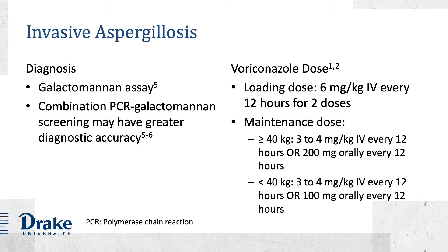Invasive aspergillosis is an opportunistic infection from the aspergillus species mold that usually affects patients who are immunocompromised. The infection most commonly involves the respiratory tract and presents as sinusitis, pneumonia, or tracheobronchitis. Galactomannan may serve as a diagnostic biomarker as it is a carbohydrate component of the aspergillus species cell walls. It is important to perform the assay prior to initiation of antifungal therapy, as initiating antifungal therapy prior may result in a false negative.